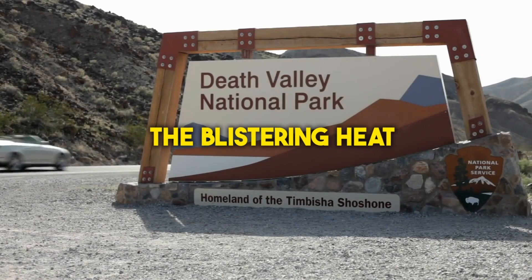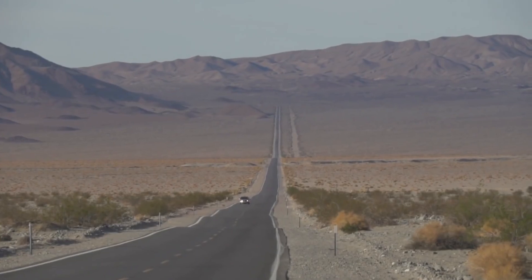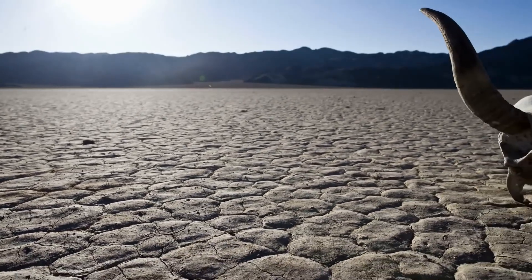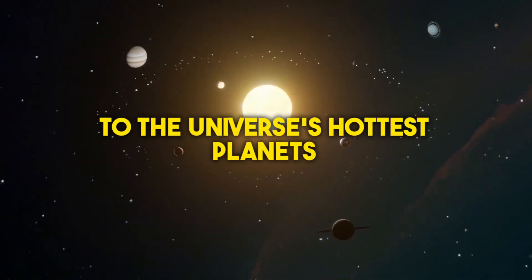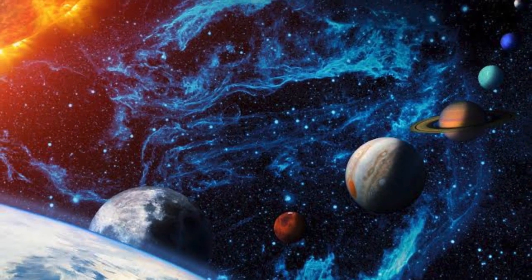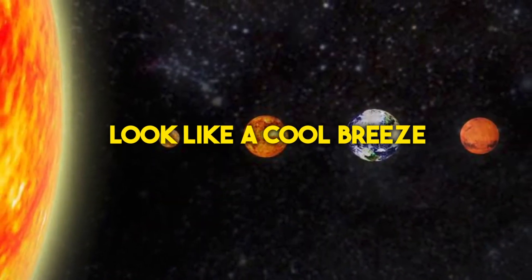Imagine the blistering heat of Death Valley at 134 degrees Fahrenheit, the hottest temperature ever recorded on Earth. Now picture a place where this sweltering heat would be considered mild. Welcome to the universe's hottest planets, where temperatures soar to unimaginable extremes, making Earth's record highs look like a cool breeze.